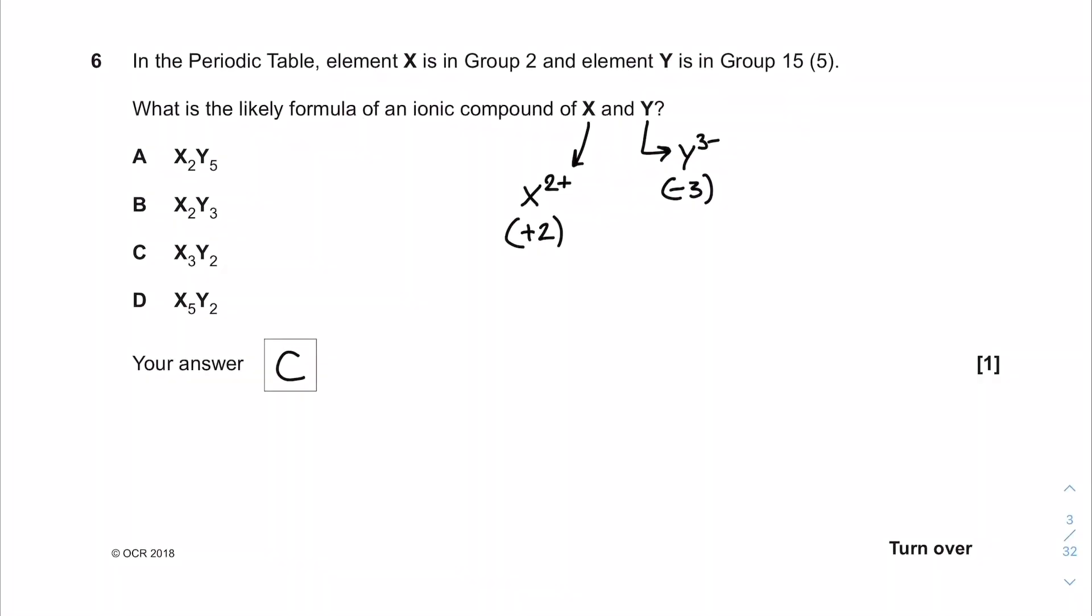Question 6. In the periodic table element X is in group 2 and element Y is in group 15 or 5 as most of us would call it. What is the likely formula of an ionic compound of X and Y? Being in group 2 means X is 2+. Y being in group 5 is likely to be 3- like a nitride or phosphide ion. So you're going to need 3 lots of the X and 2 lots of the Y, giving option C: X3Y2.